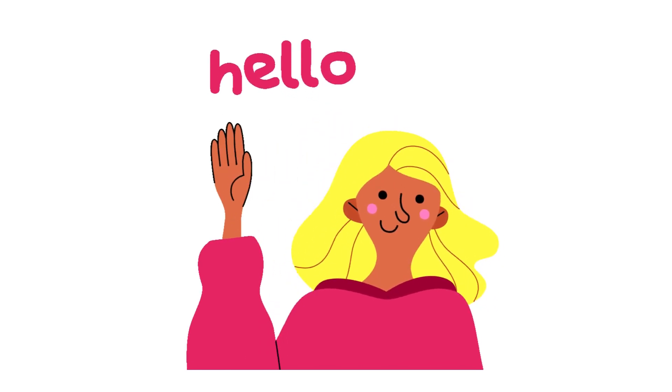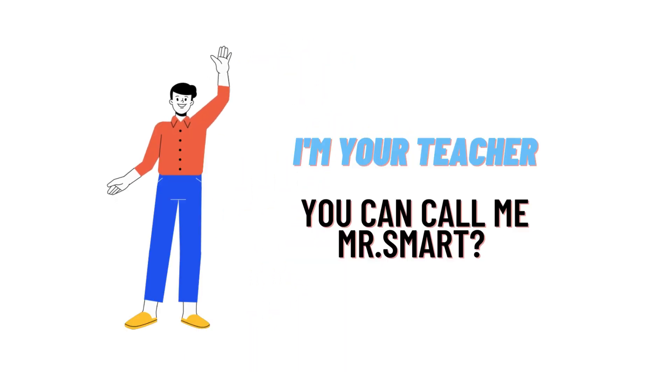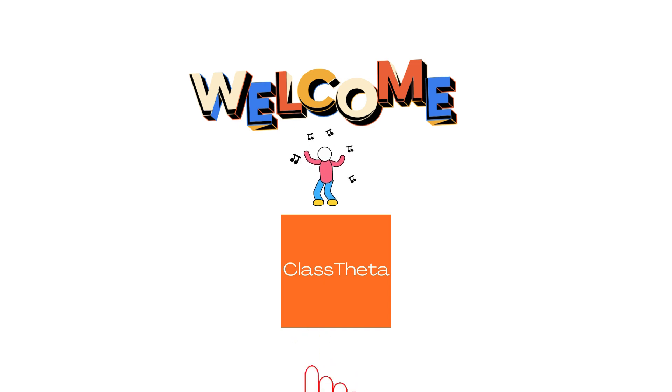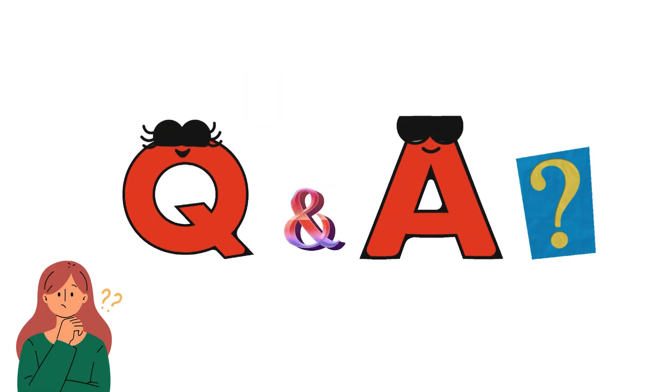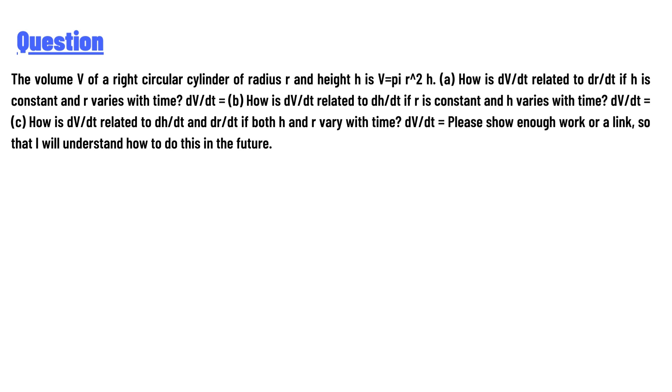Hello everyone, how are you? I am Akrash, your teacher here, and I will teach you different questions and their answers. So I welcome you on classtheta.com. Our today's question is the volume of a right circular cylinder of radius r and height h is V equals pi r raised to power 2 h.